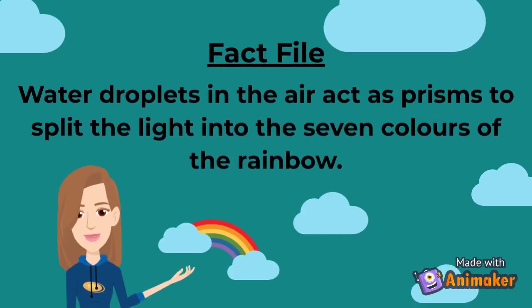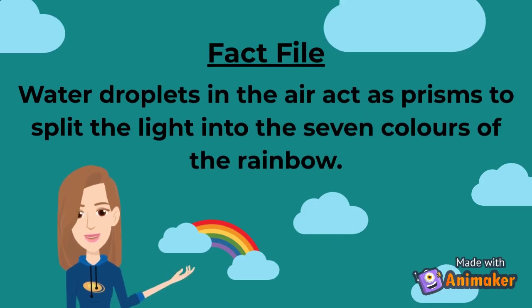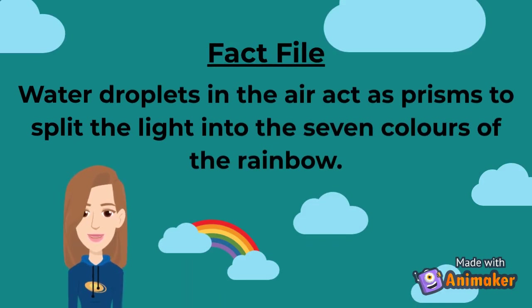Fact file: Water droplets in the air act as prisms to split the light into the seven colors of the rainbow.